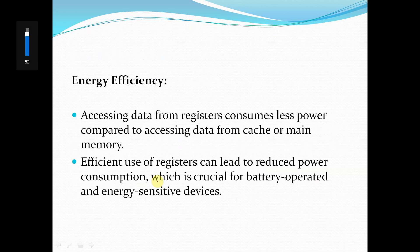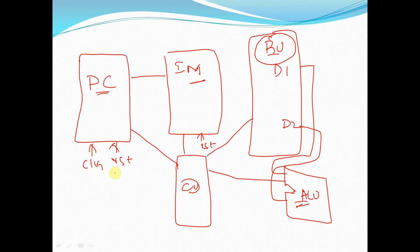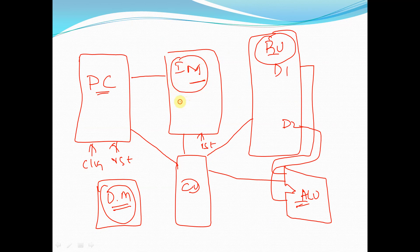Regarding energy efficiency, accessing data from registers consumes less power compared to accessing data from cache or main memory. In the architecture there is also a data memory in addition to instruction memory. The instruction memory stores instructions, while the data memory stores data.